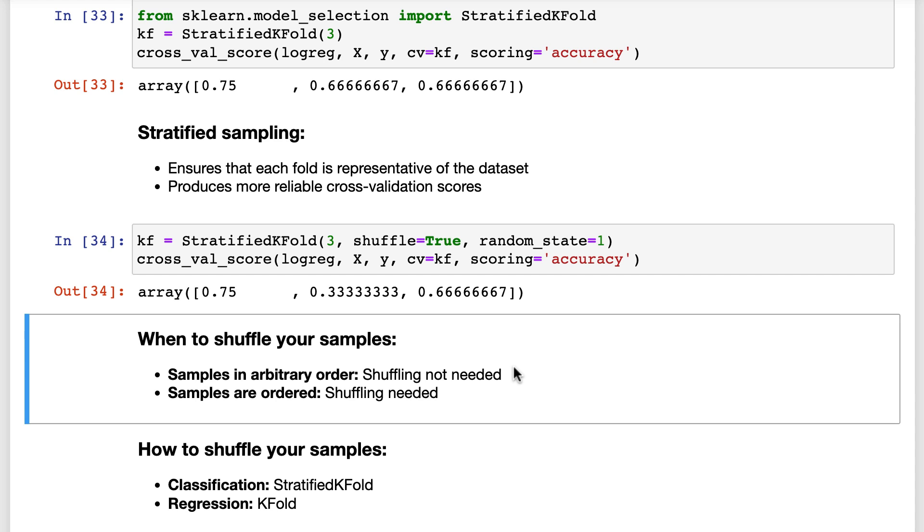If your samples are not in an arbitrary order, you should use StratifiedKFold as your splitter and set shuffle to true, and then pass the splitter object to the cv parameter of cross-validation score, as I did above.